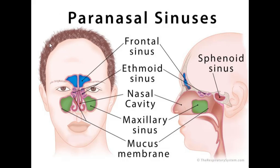This is the anterior view of the sinuses and this is the lateral view. The frontal sinus is rudimentary at birth and drains to the middle meatus. Its blood supply is the supra-orbital artery, which comes from the supra-orbital foramen right above the eye. And the nerve supply — super easy — is the supra-orbital nerve.